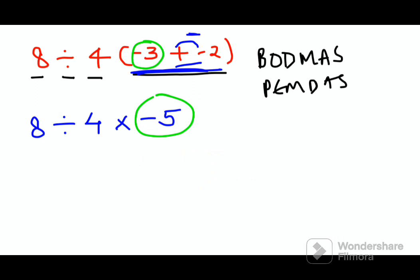Now please understand, multiplication and division in both of these rules hold the same importance. All you have to do is just go from left to right. So what you have is 8 divided by 4 gets you 2 into minus 5. So 2 into minus 5, final answer is minus 10.